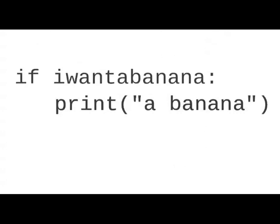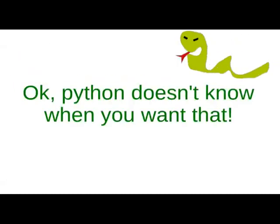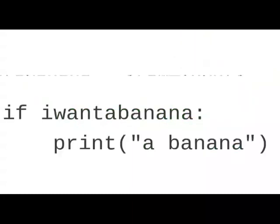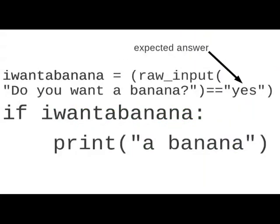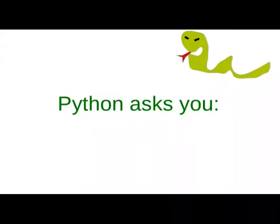Okay, Python doesn't know when you want it. Define 'I want a banana' by input: 'do you want a banana?' equals yes. Yes is the expected answer. Python now asks you: do you want a banana? You answer of course yes — a banana.